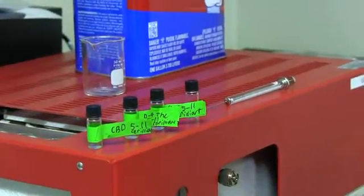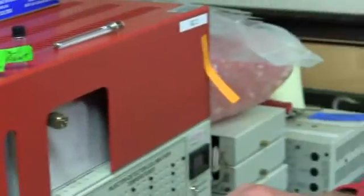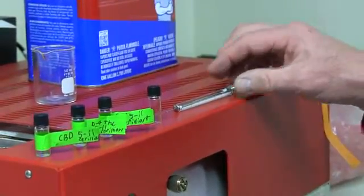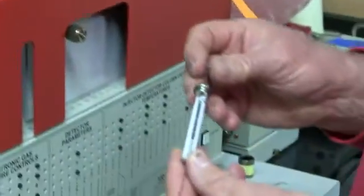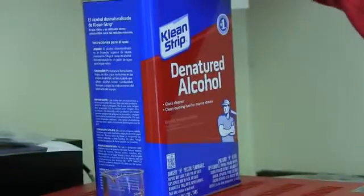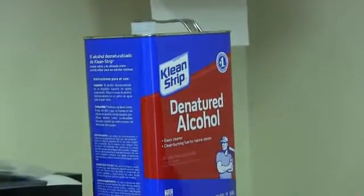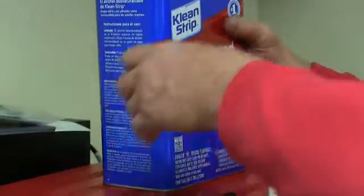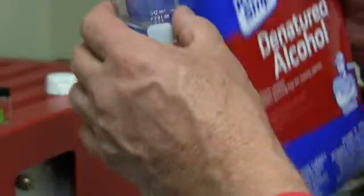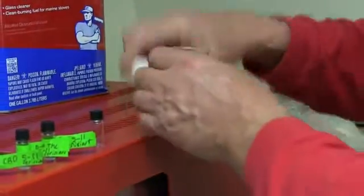So we want to dilute this down for a working standard. These are our primary standards and we want to make a working standard. So to do that, you need a syringe. That's a hundred microliter syringe. And you need some solvent to make the dilution. So you can just use the Home Depot denatured alcohol. It's really 50/50 methanol and ethanol. And we just need a little bit of it.